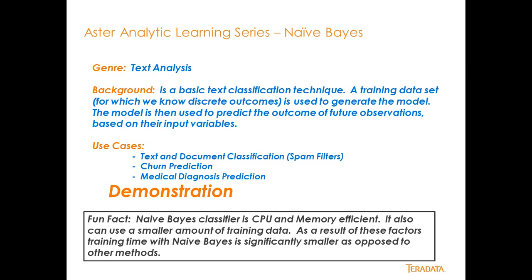A fun fact is the Naive Bayes classifier is CPU and memory efficient, meaning it doesn't require a lot of heavy equipment to work with. You don't require a lot of training data either, so the training time with Naive Bayes is significantly reduced compared to other methods. It's part of the machine learning capabilities that come available inside of Aster.